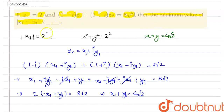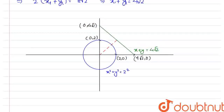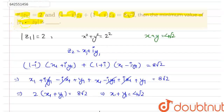To find the minimum value of |z1 − z2|, we draw the circle x² + y² = 4 and the line x + y = 4√2. The blue line represents the circle with radius 2, so the intercepts are (2, 0) and (0, 2). The green line represents x + y = 4√2, with intercepts (4√2, 0) and (0, 4√2). The minimum |z1 − z2| is the minimum distance between the line and the circle.